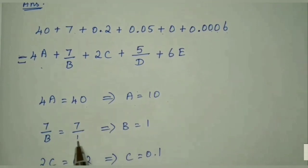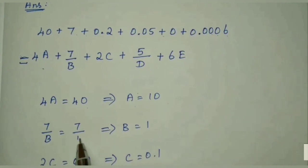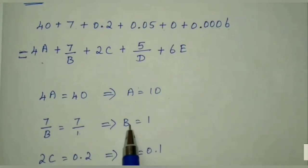7 by B equals 7. 7 denominator is 1. So numerator is equal means denominator also equal. So B value equals 1.